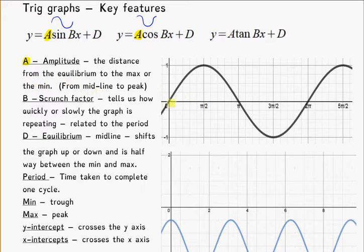And trig graphs always are repetitive, they're going to go up and down, and so you look for that line down the middle that splits that equally in half.